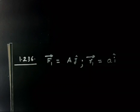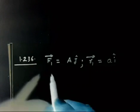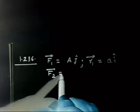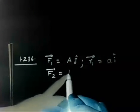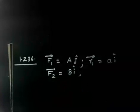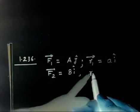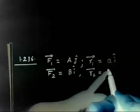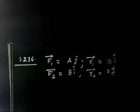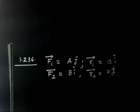Now what is the next part of the problem? There is another force F2, given as BI. And it is applied to a radius vector BZ, a small BZ. So these are the two forces with their radius vectors — points of application — given to us.